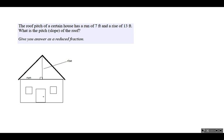Here's an interesting roof pitch problem. The roof pitch of a certain house has a run of seven feet and a rise of 13 feet, run being a horizontal measure and rise being a vertical measure.